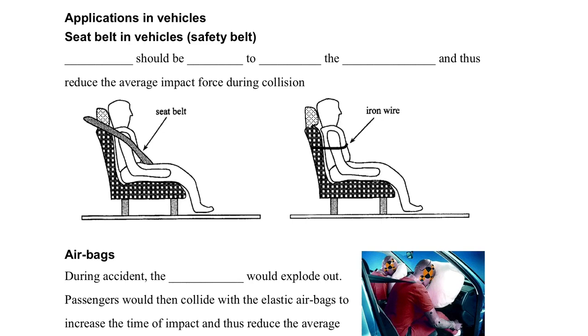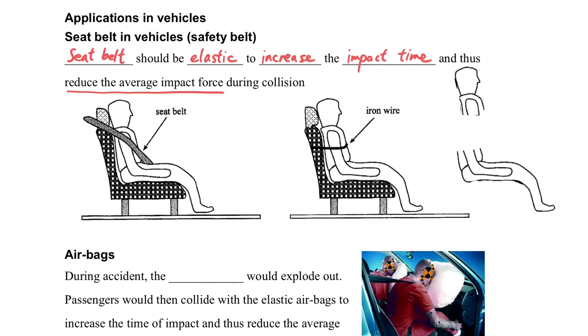Some applications in vehicles. For the seat belt in the vehicle, or we can say the safety belt, the safety belt should be elastic. Why should it be elastic? Because it can increase the impact time of the person in order to reduce the average impact force during the collision. Can you imagine if the seat belt changed into an iron wire when there is an accident, then it may cut the person into two parts.